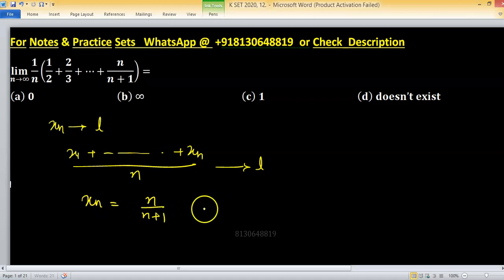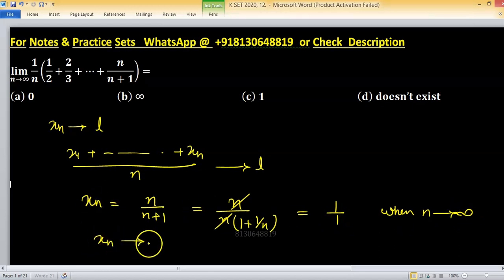Then limit of xn is n. Take n common from numerator, so 1 plus 1 upon n. This one cancels out and this will be 1 upon 1 when n tends to infinity. Limit of xn is 1.